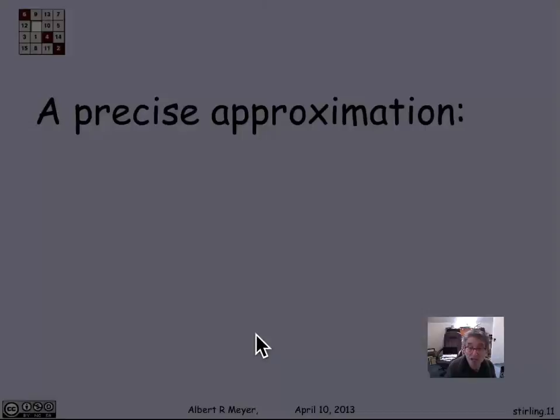A precise approximation is that n factorial is actually asymptotically equal to the square root of 2 pi n times n over e to the n. We're not going to prove that. It requires elementary calculus, but more than we want to take time for. And this crucial formula, though, that we will be using very regularly to estimate the size of n factorial is called Stirling's formula. And it's one to have on your crib sheets if you haven't memorized it.